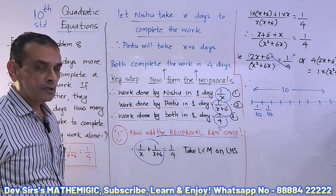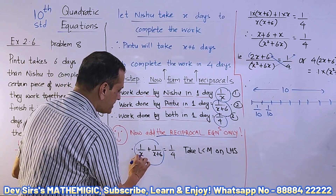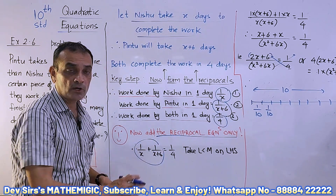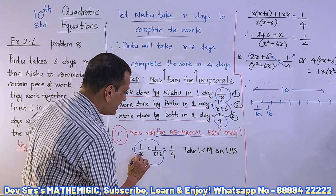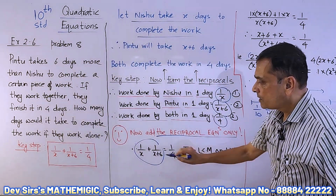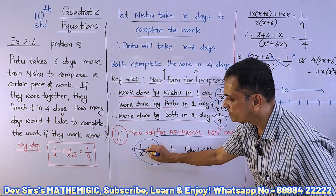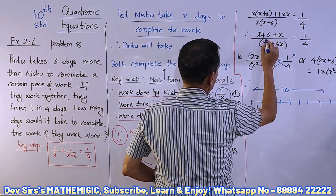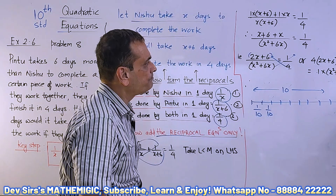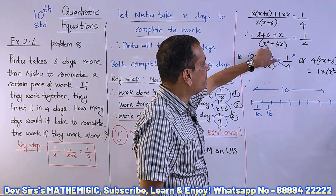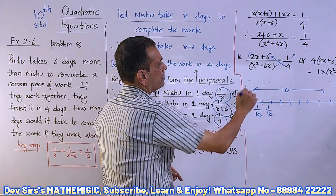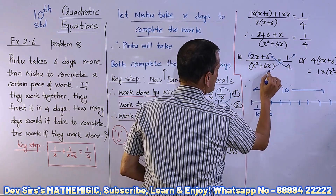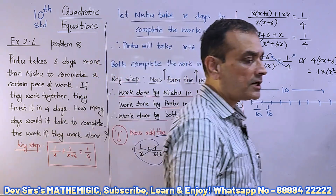After forming this equation, we take the LCM. x(x+6) is the LCM. Note: there is a plus sign in between, so you cannot use the invertendo property of ratios — you must find the LCM. So: [1·(x+6) + 1·x] / [x(x+6)] = 1/4. That gives us (x+6+x) / (x²+6x) = 1/4, which simplifies to (2x+6) / (x²+6x) = 1/4. Now let us solve this quadratic equation.